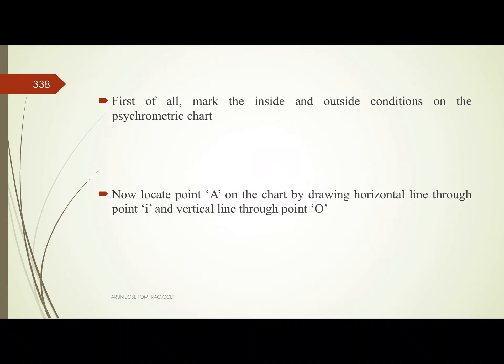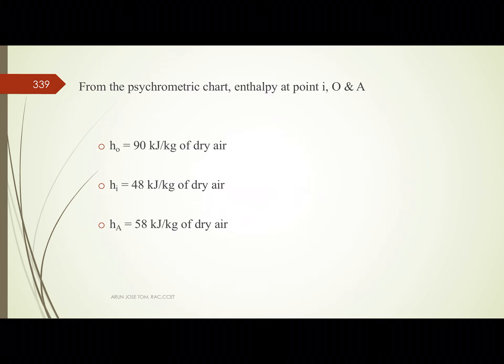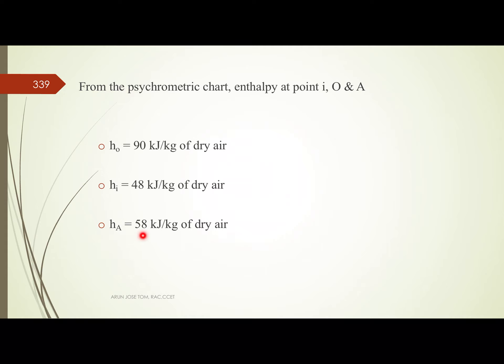We have the inside and outside conditions marked on the psychrometric chart. We mark point A and point O on the chart, and locate the corresponding enthalpies. H_O is 90, H_I is 48, and H_A is 58.